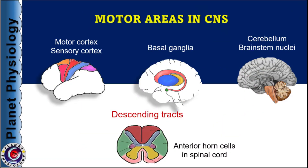As shown in the diagram, motor components not only include primary motor, pre-motor and supplementary motor cortex but also somatosensory cortex. Then, basal ganglia, cerebellum, various nuclei in brainstem like red nucleus, vestibular nuclei, reticular nuclei and also the anterior horn cells of the spinal cord. The higher centres till the brainstem regulate the activity of anterior horn cells via various descending tracts.